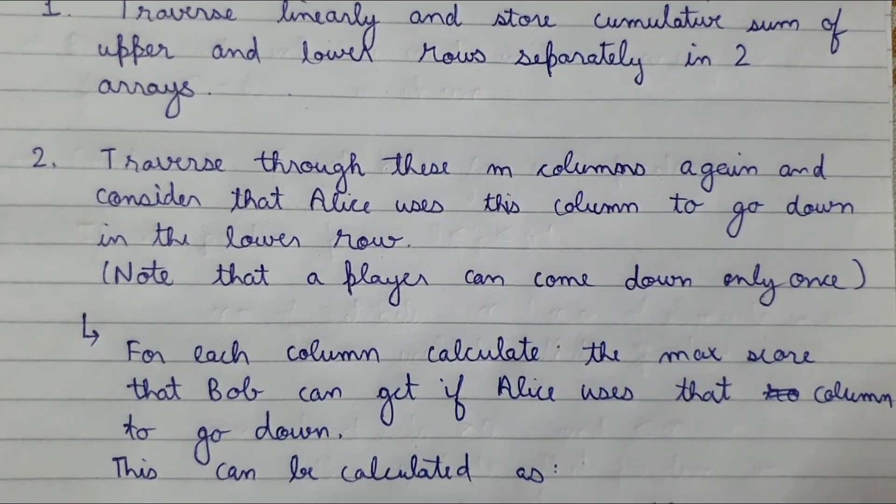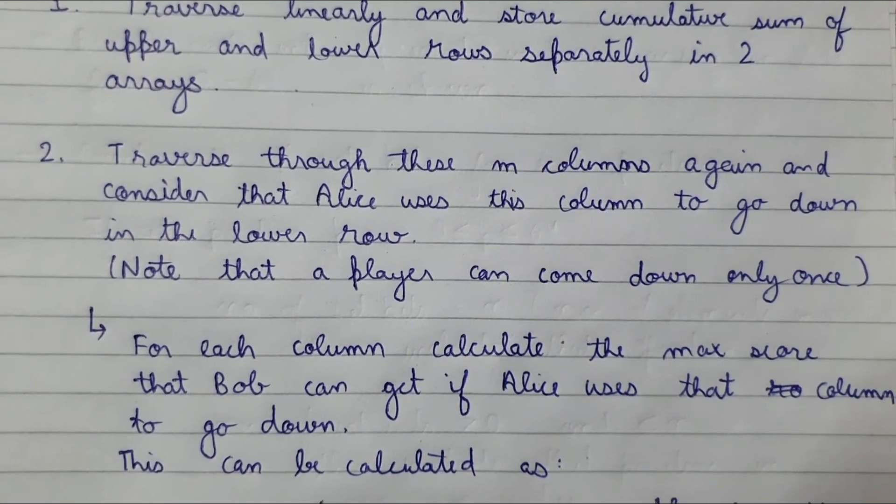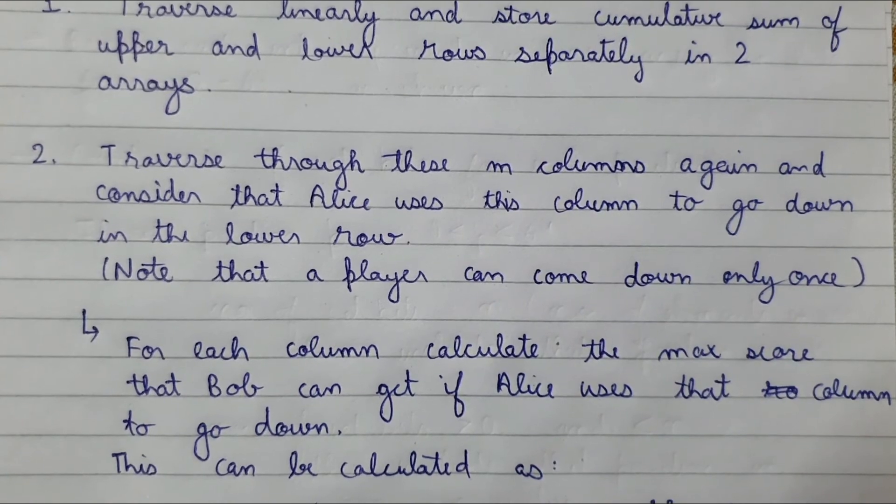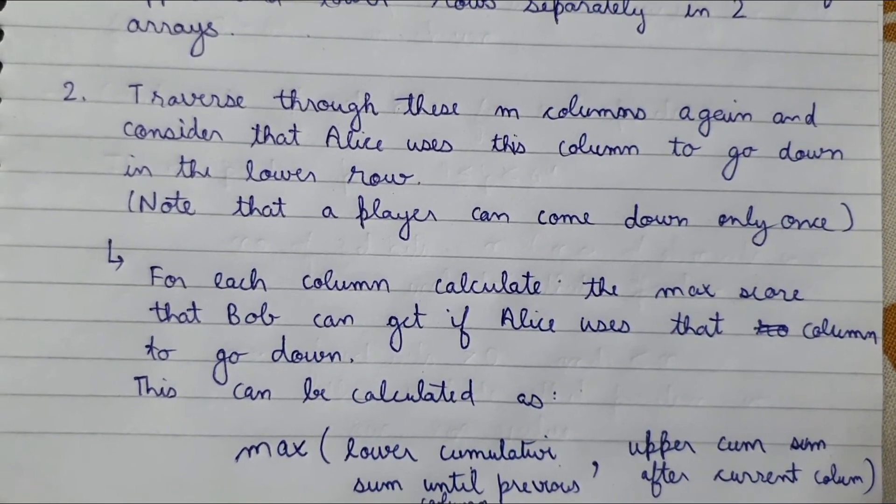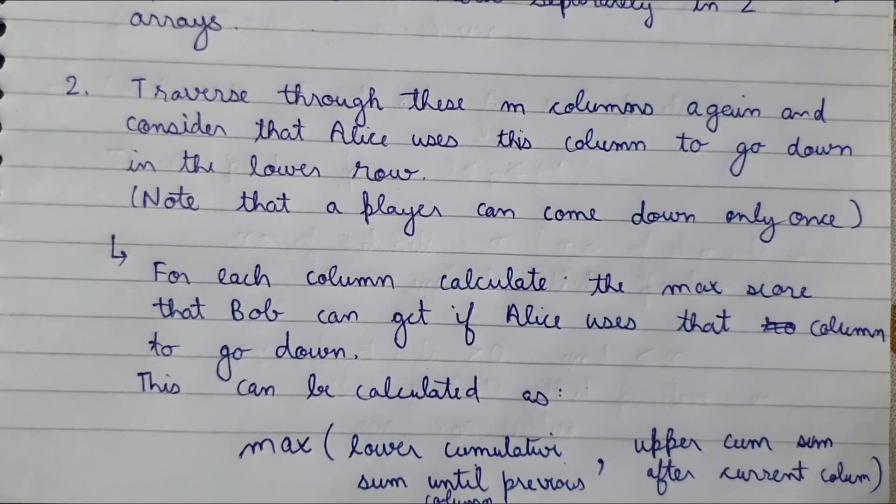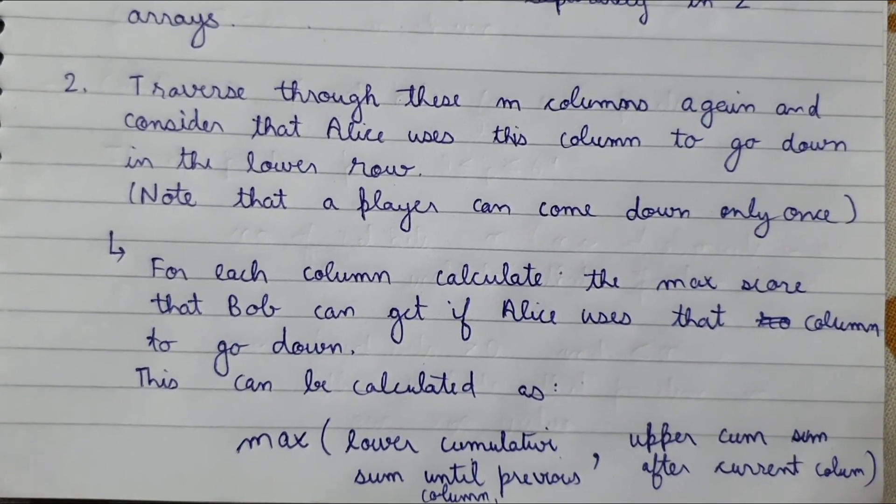And that score can be calculated as follows: it is the maximum of the lower cumulative sum until the previous column, or the upper cumulative sum after the current column.